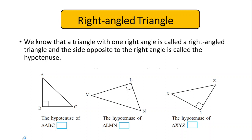In a triangle, if any one angle is 90 degrees, that is called a right angle triangle. And the side which is opposite to a right angle is called the hypotenuse.